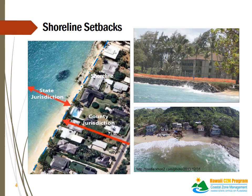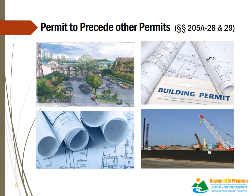The shoreline setback variance is not a permit, but an exception to the shoreline setbacks, and may allow structures or activities within the shoreline area. The SMA permit is the first permit required when multiple permits are required for a development. No agency is authorized to issue other permits pertaining to any development within the SMA unless approval of the SMA permit is first issued. No development shall be allowed in any county within the SMA without obtaining an SMA permit, and the SMA permit as the first permit does not preclude concurrent processing of other permits.